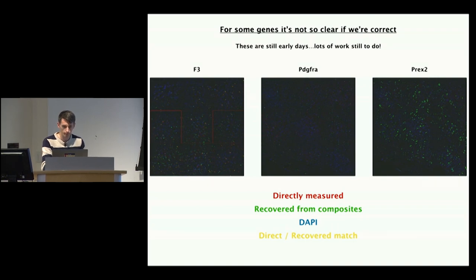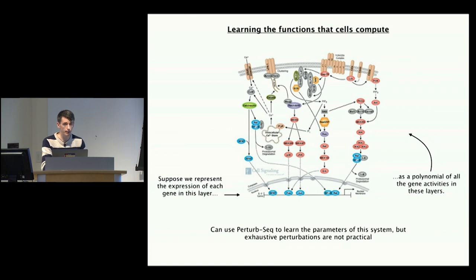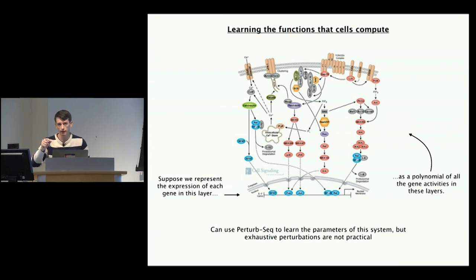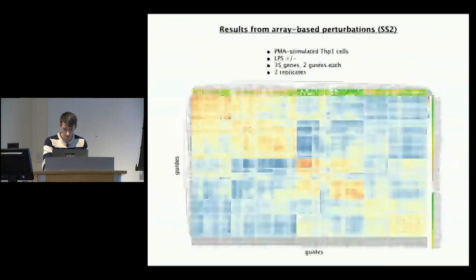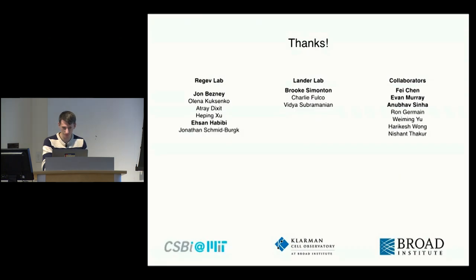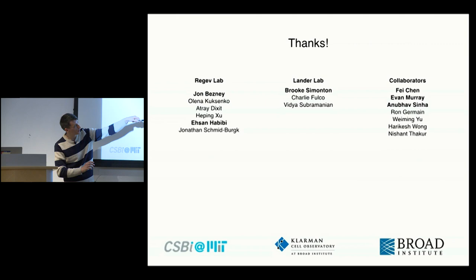All of these same mathematical ideas and concepts for collecting data can be applied to learning about cell circuitry. As I described briefly, the equivalent way of collecting composite data there is to do experiments that tell you the average outcome of multiple individual experiments. We're interested in applying that to study combinatorial effects in different signaling pathways. And with that, thank you very much for listening.